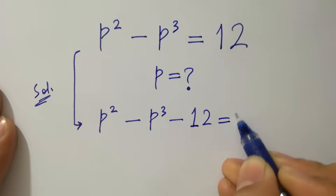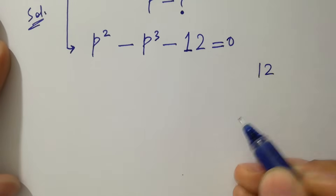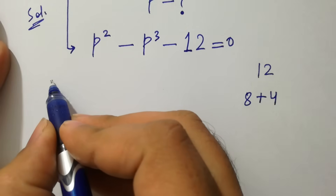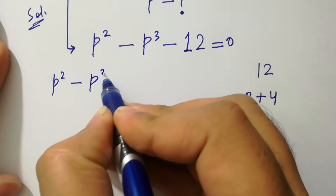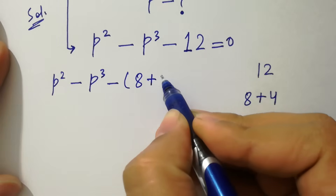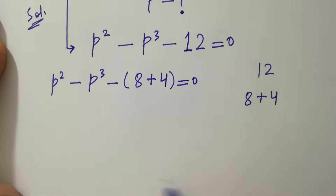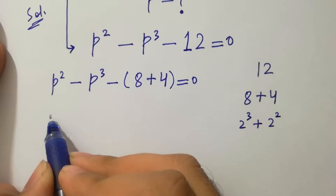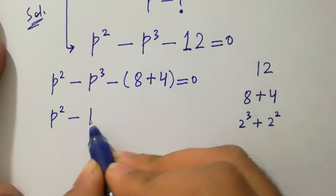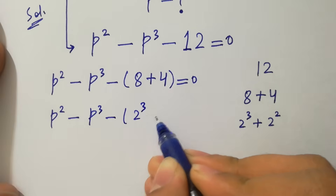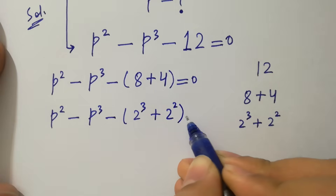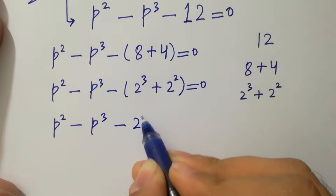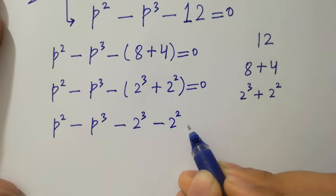Since 12 is the same as 8 plus 4, we rewrite: p squared minus p cubed minus 8 plus 4 equals zero. Note that 8 equals 2 cubed and 4 equals 2 squared, so we have p squared minus p cubed minus 2 cubed plus 2 squared equals zero.